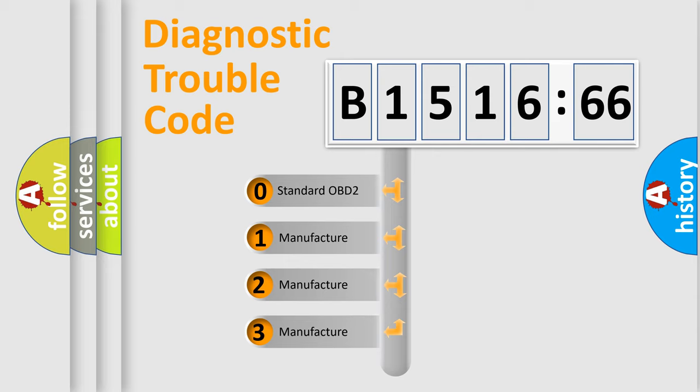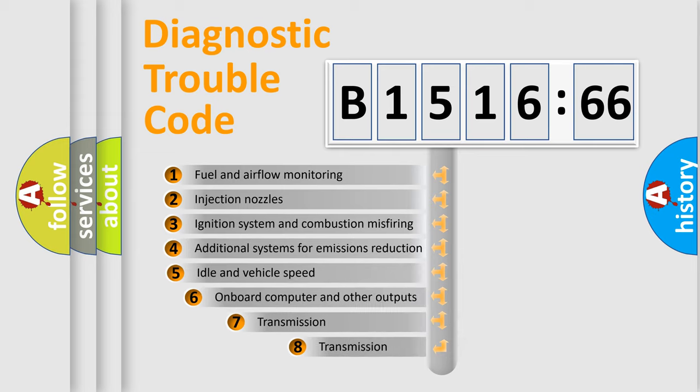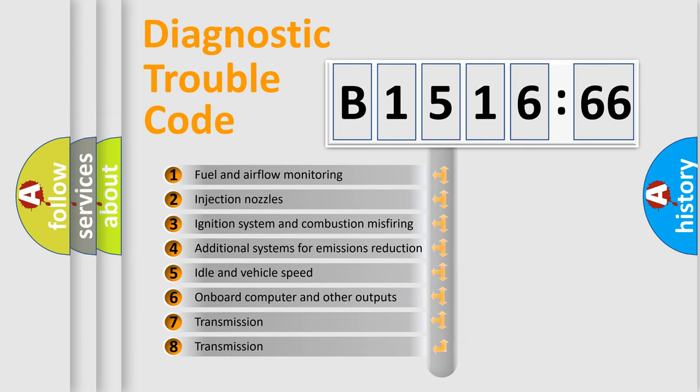This distribution is defined in the first character code. If the second character is expressed as zero, it is a standardized error. In the case of numbers 1, 2, or 3, it is a manufacturer-specific error expression.